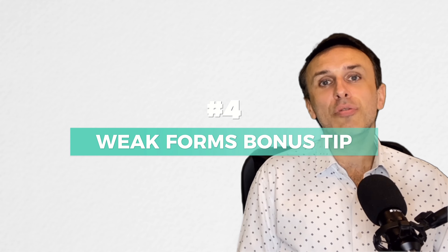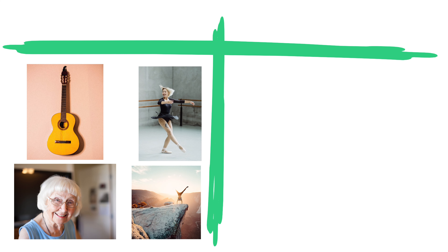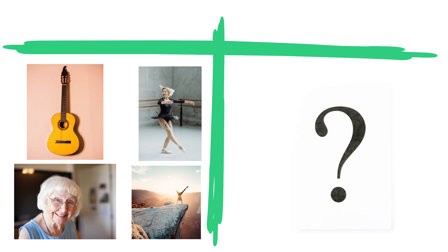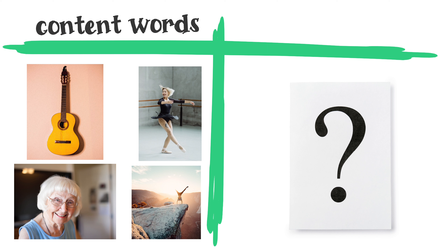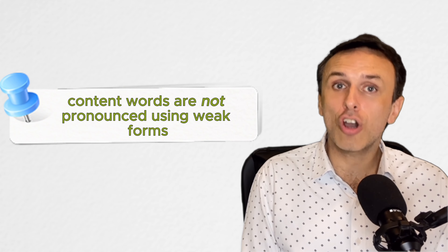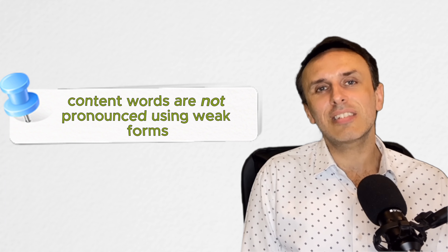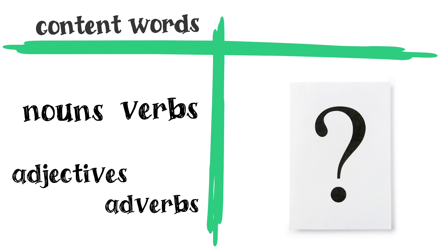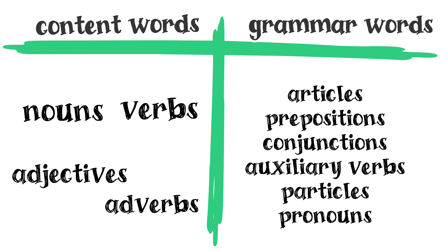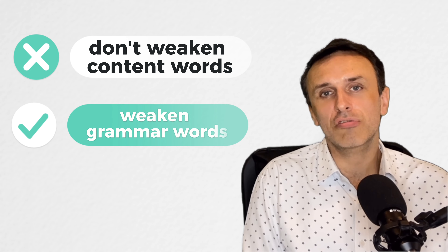Now you probably want to know which words are pronounced using weak forms. Try this simple trick: can you think of a picture when you hear these words? Guitar. Dance. Happy. Dangerously. How about these words? To. Of. An. And. The words in the first list are content words — nouns, verbs, adjectives, and adverbs. You can easily think of a picture, so these are not pronounced using weak forms. However, the words in the second list — articles, prepositions, and conjunctions — are grammar words and are often pronounced using weak forms. If you can think of a picture, say the word clearly. If you can't think of a picture, use the weak form.